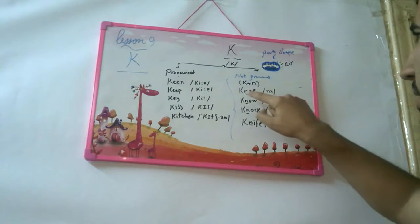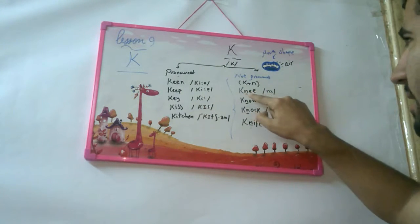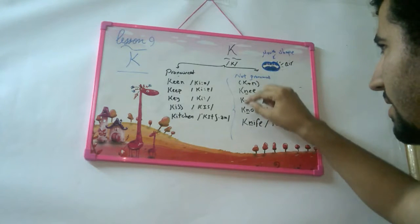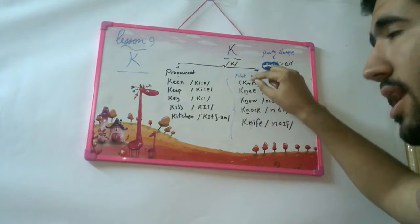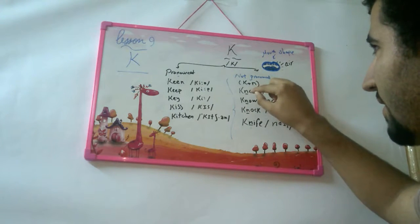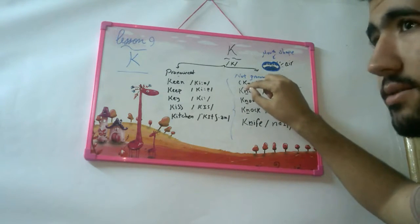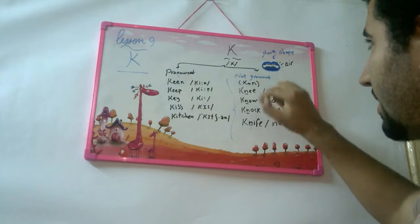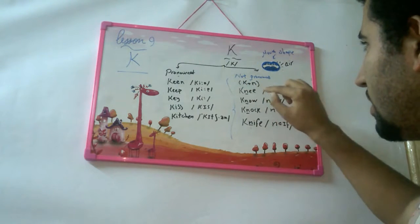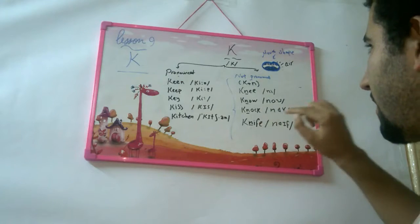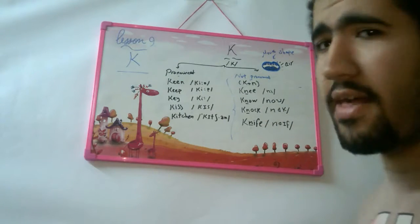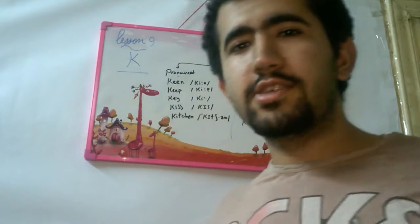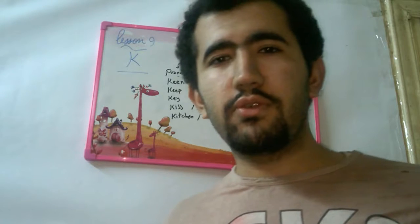As you can see, we have KN combinations here. The K is silent because there is an N after the K. Examples: knee, knock, knife, knowledge. And in American English they say 'knock knock, who's there?' — that's what we've covered so far.